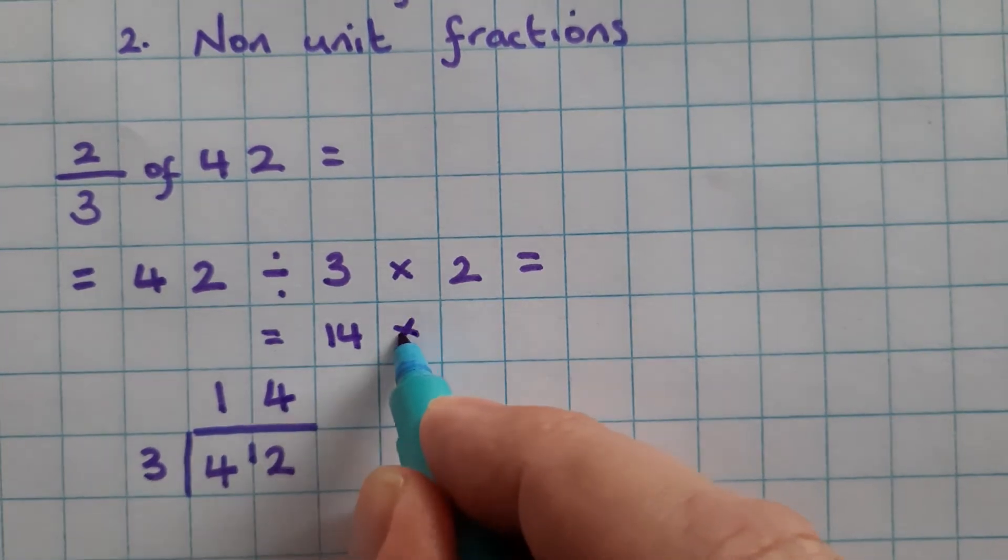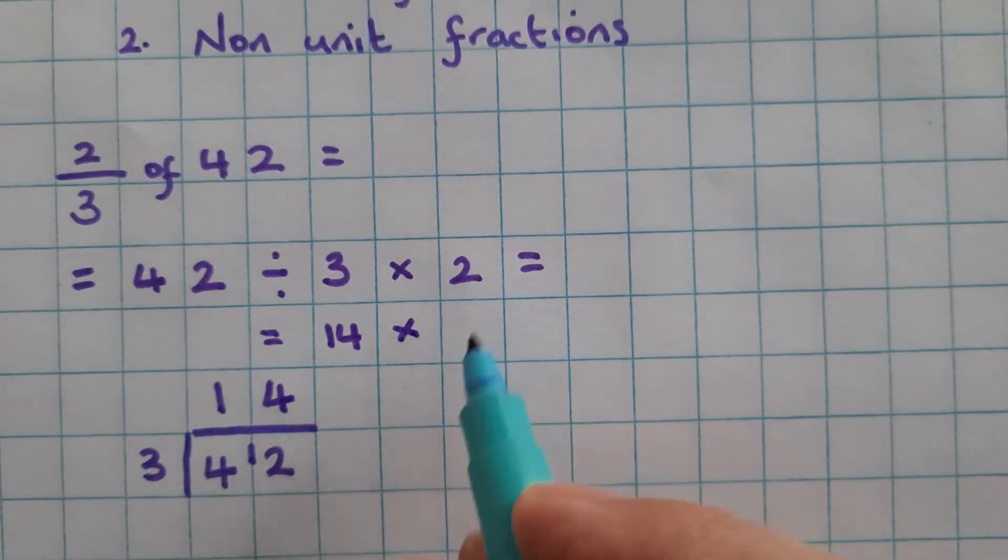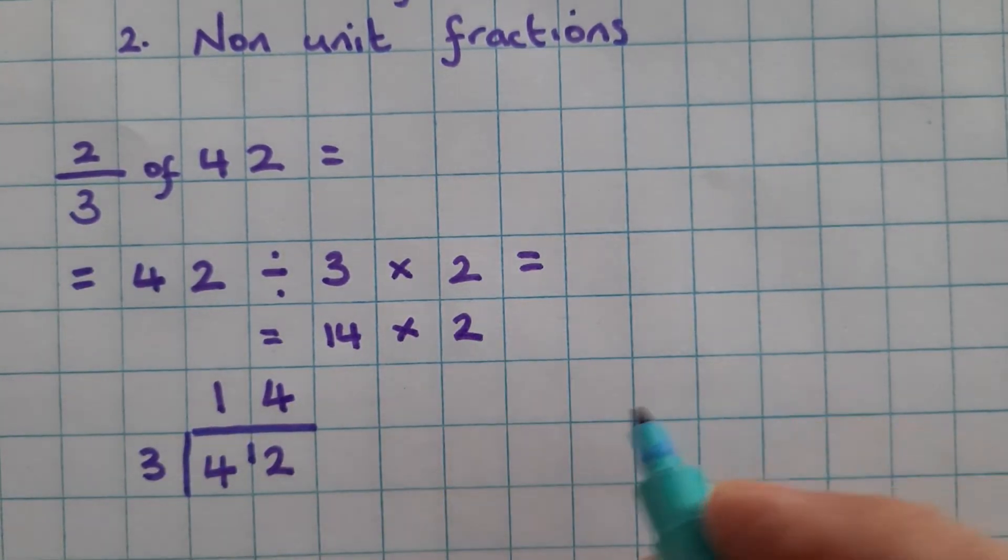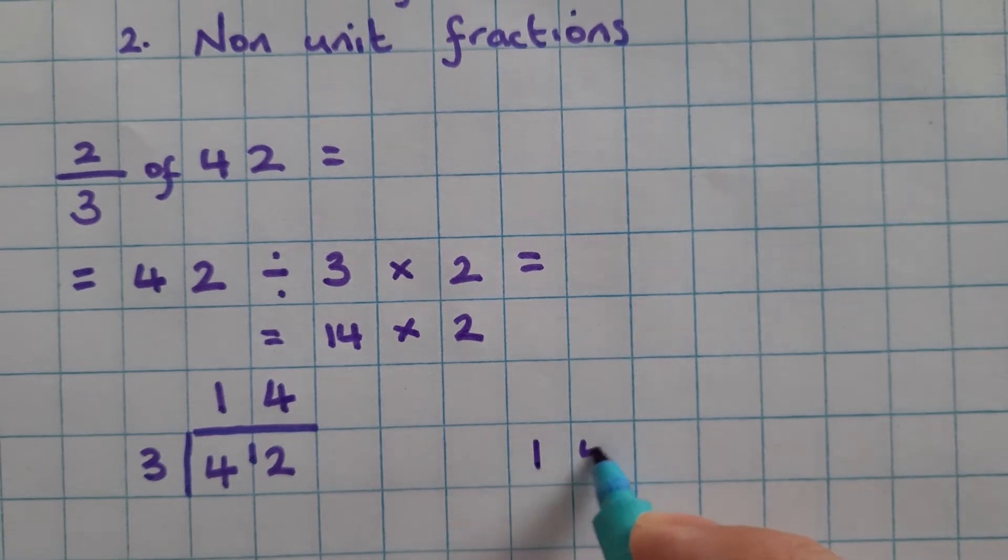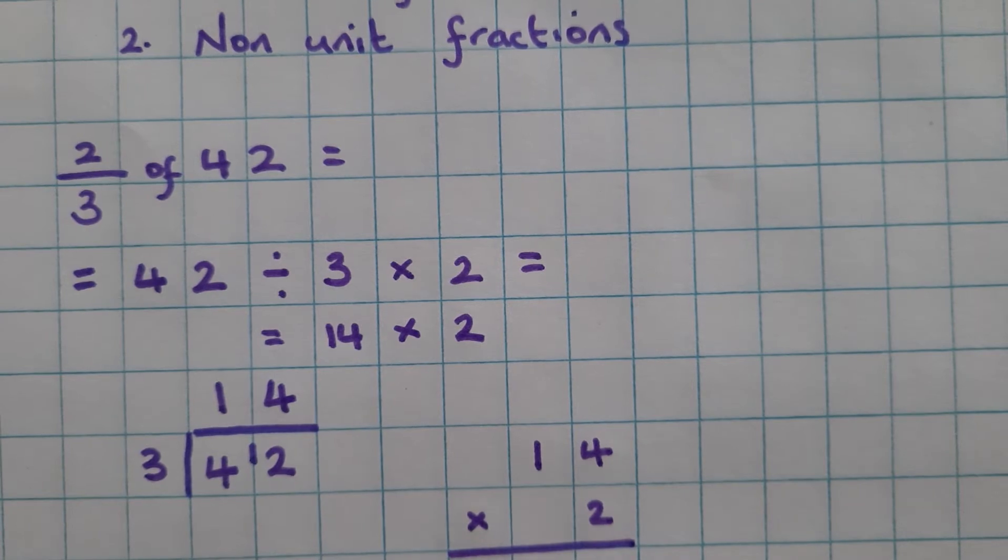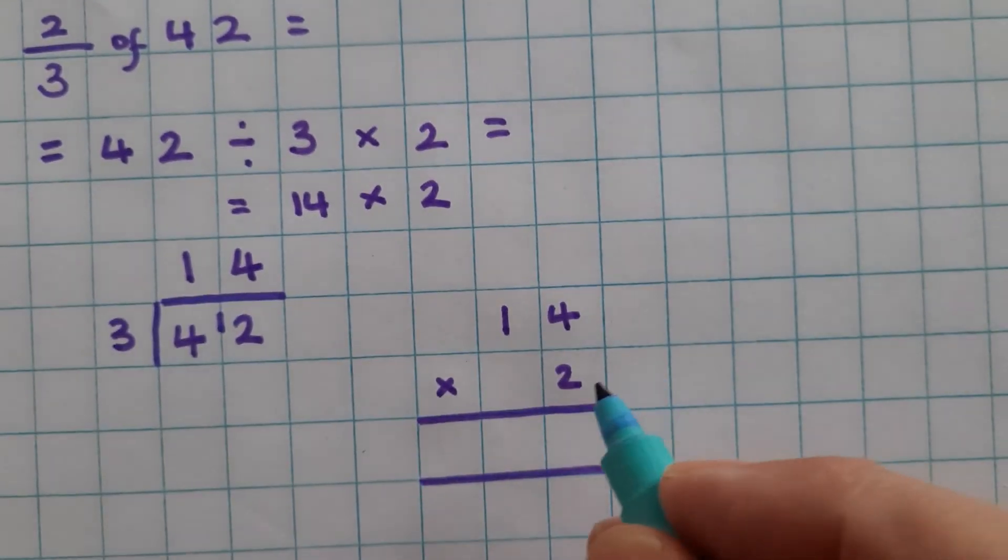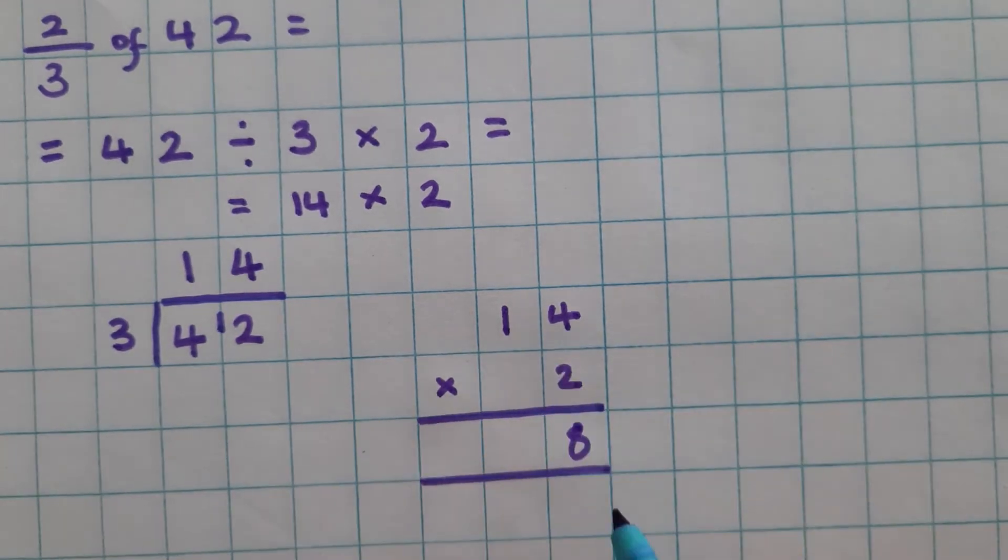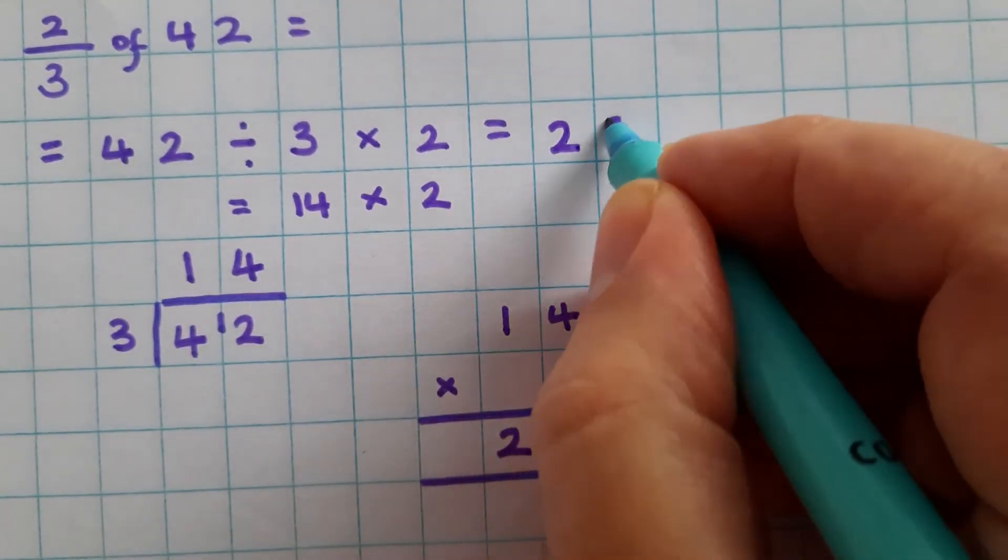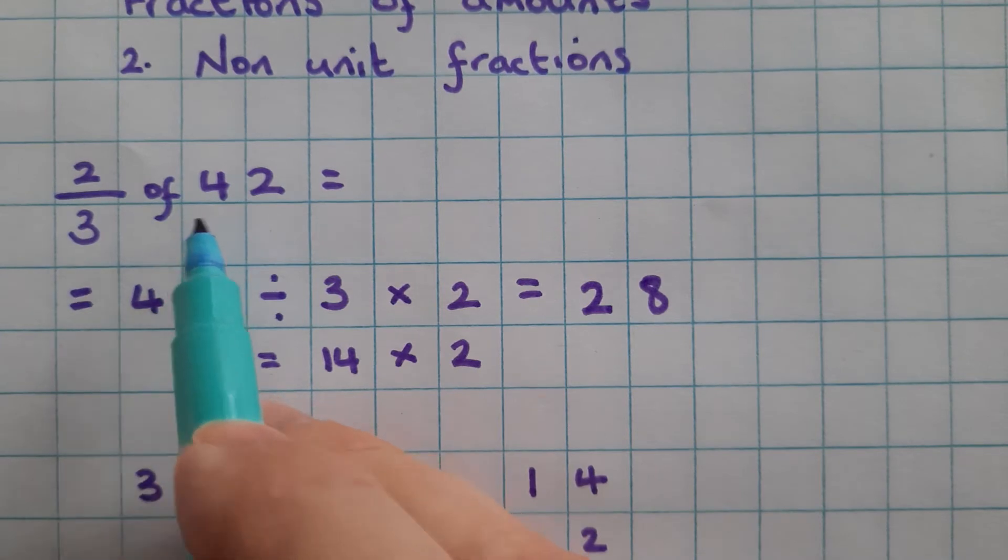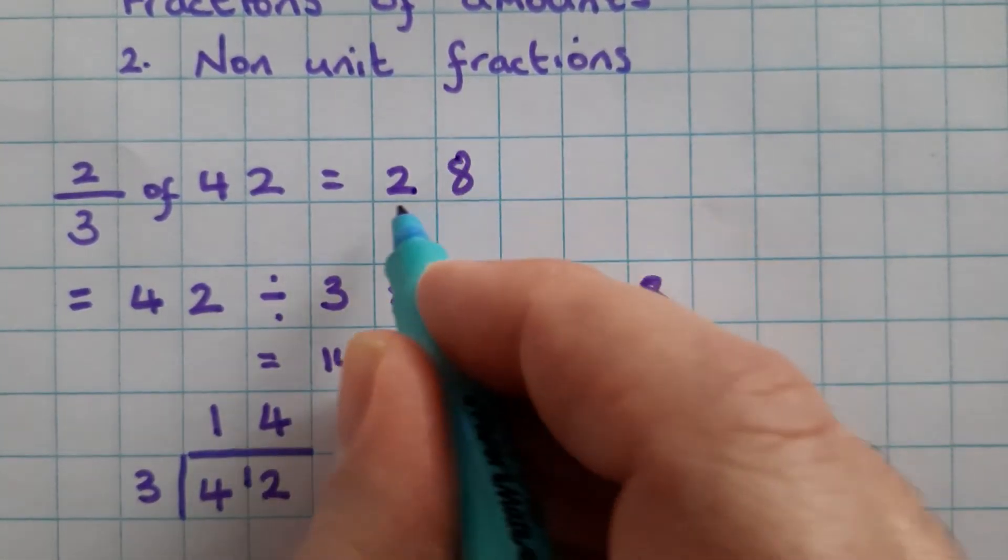That's told us what 1 third is, but we've now got to multiply it by 2 to tell us what 2 thirds is. 14 times 2. 2 times 4 is 8. 2 times 10 is 20, given as an answer of 28.